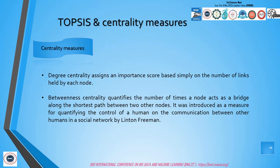Betweenness centrality quantifies the number of times a node acts as a bridge along the shortest path between two other nodes. It was introduced as a measure for quantifying the control of a human on communication between other humans in a social network by Linton Freeman. This measure shows which nodes are bridges between nodes in a network by identifying all the shortest paths and then counting how many times each node falls on one.